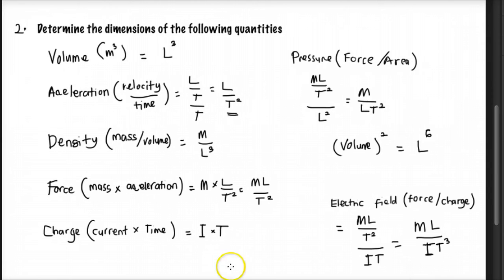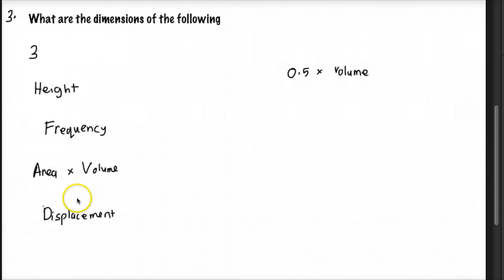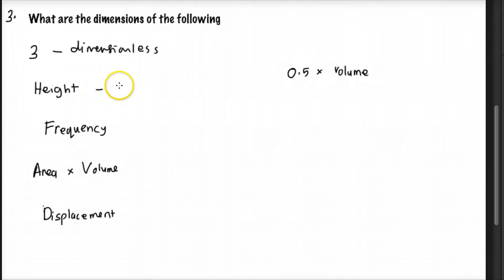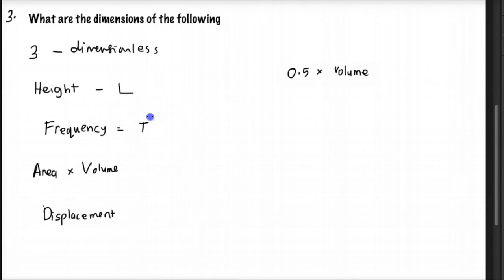That's question 2. We move to question 3, which wants us to state the dimensions of each quantity. The first is just the number 3 — there's no dimension, so it's dimensionless. The second is height, which is a distance, so that's just L. The third is frequency, which is in hertz — that's 1 over time — so the dimension is T to the minus 1.